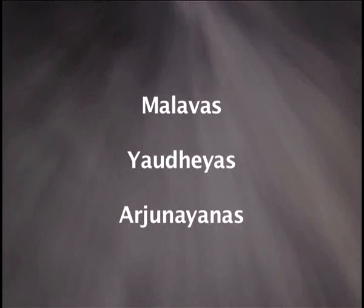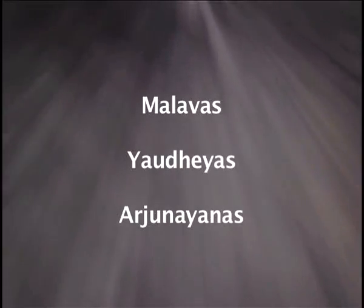About the non-monarchical system, we may not know great details. But there were groups like the Malavas, the Yodhas, and the Arjunayanas, which had their own seals and claimed themselves as Ganas or Sanghas. Some of these groups, clearly non-monarchical in character, were also known for their warlike activities.